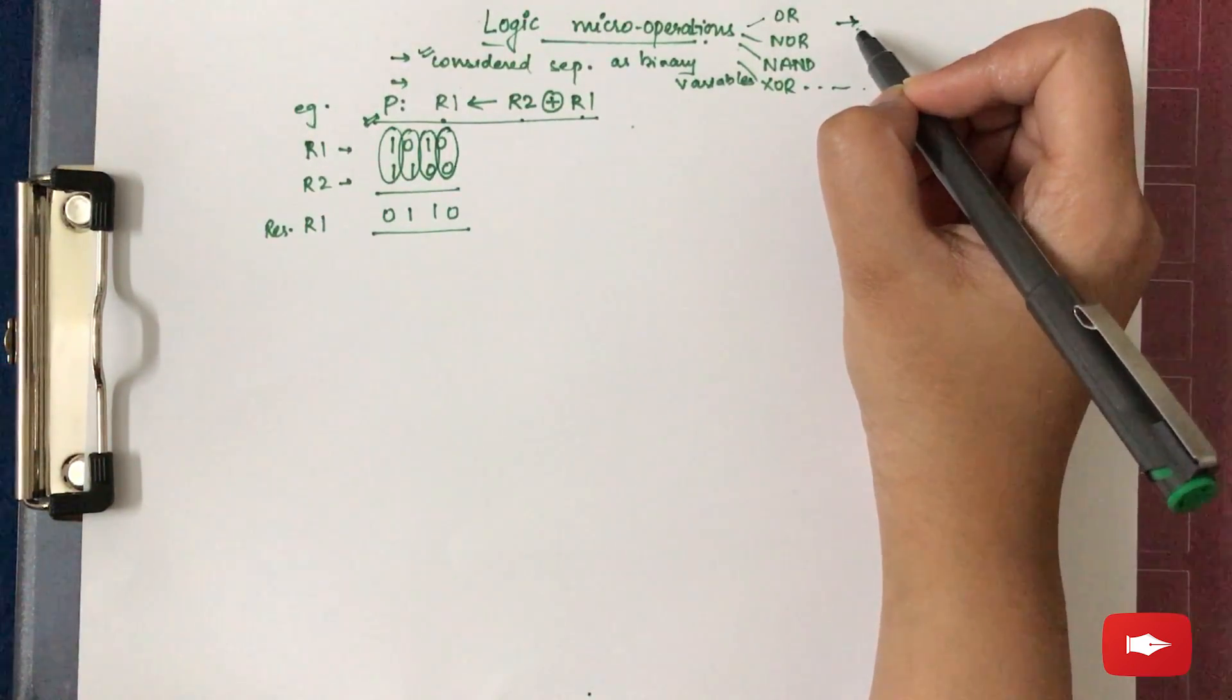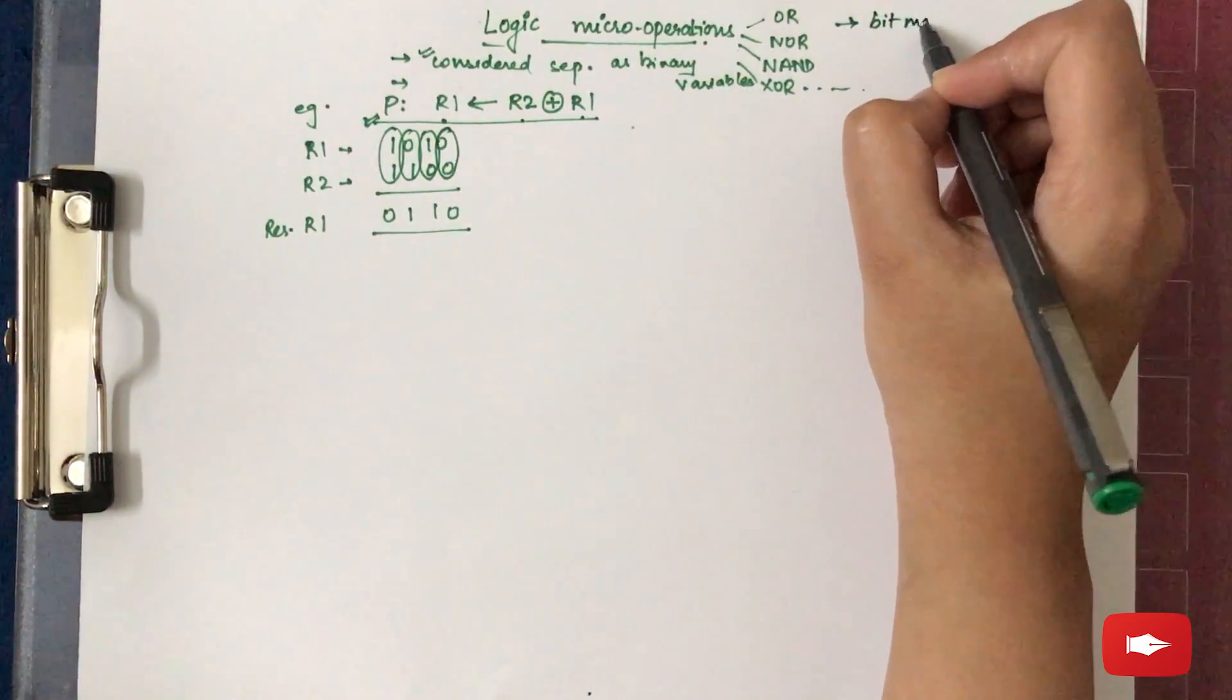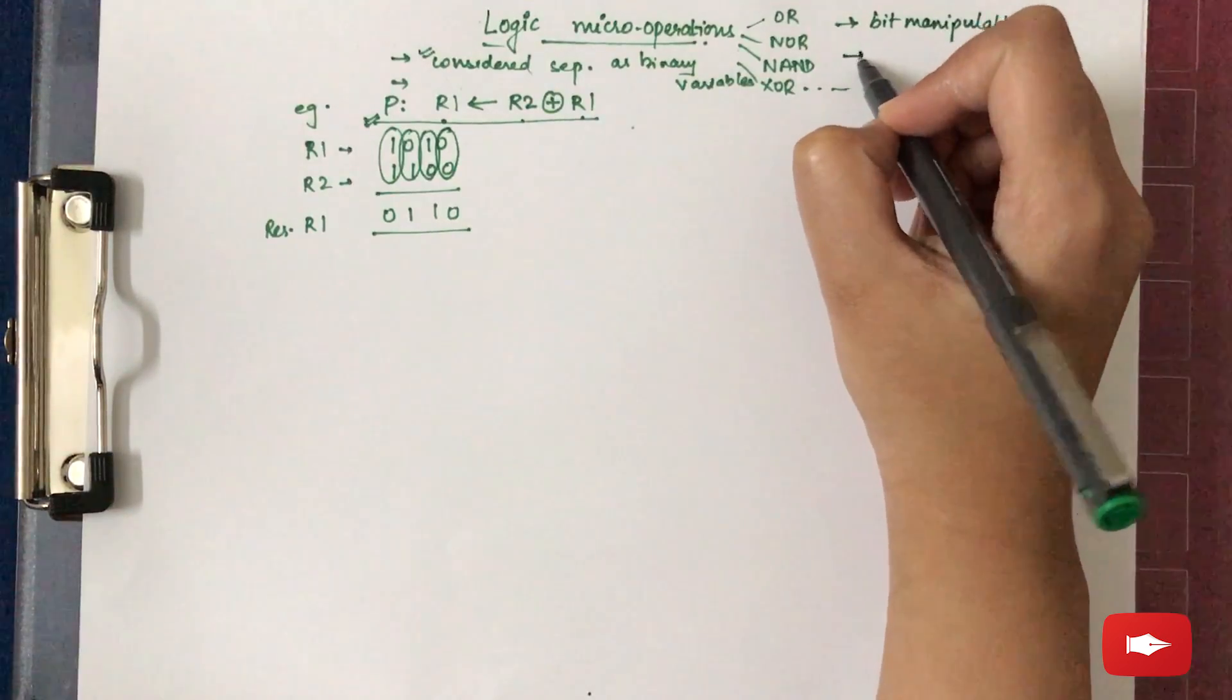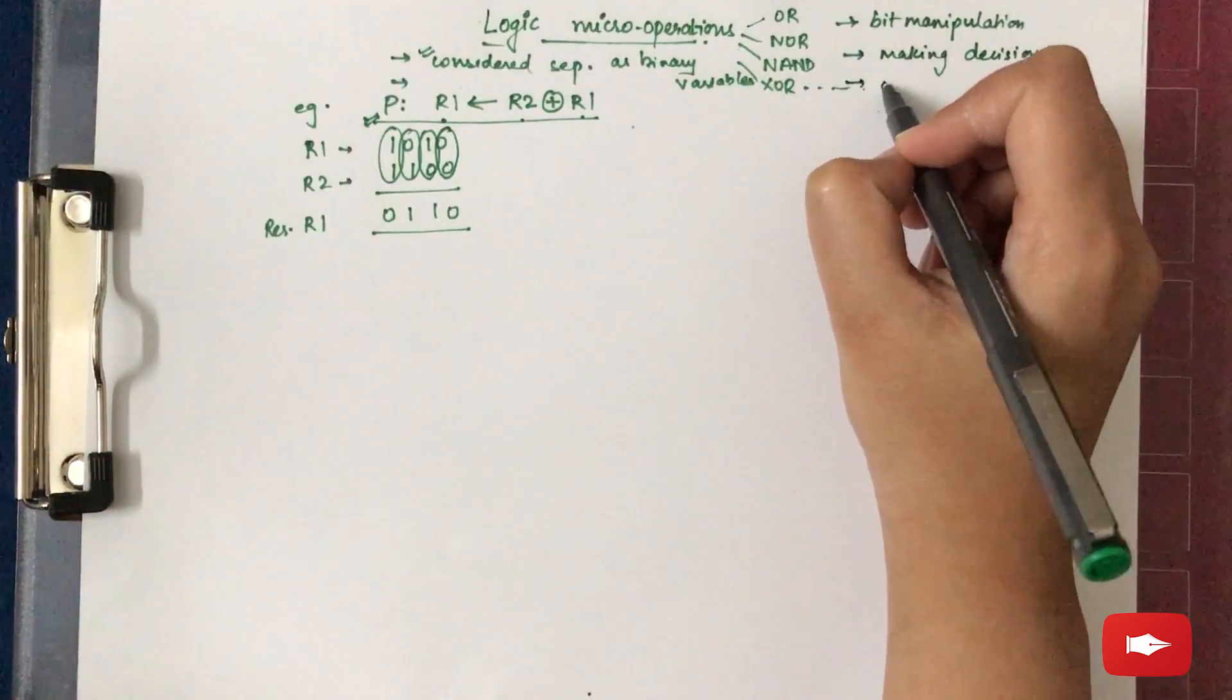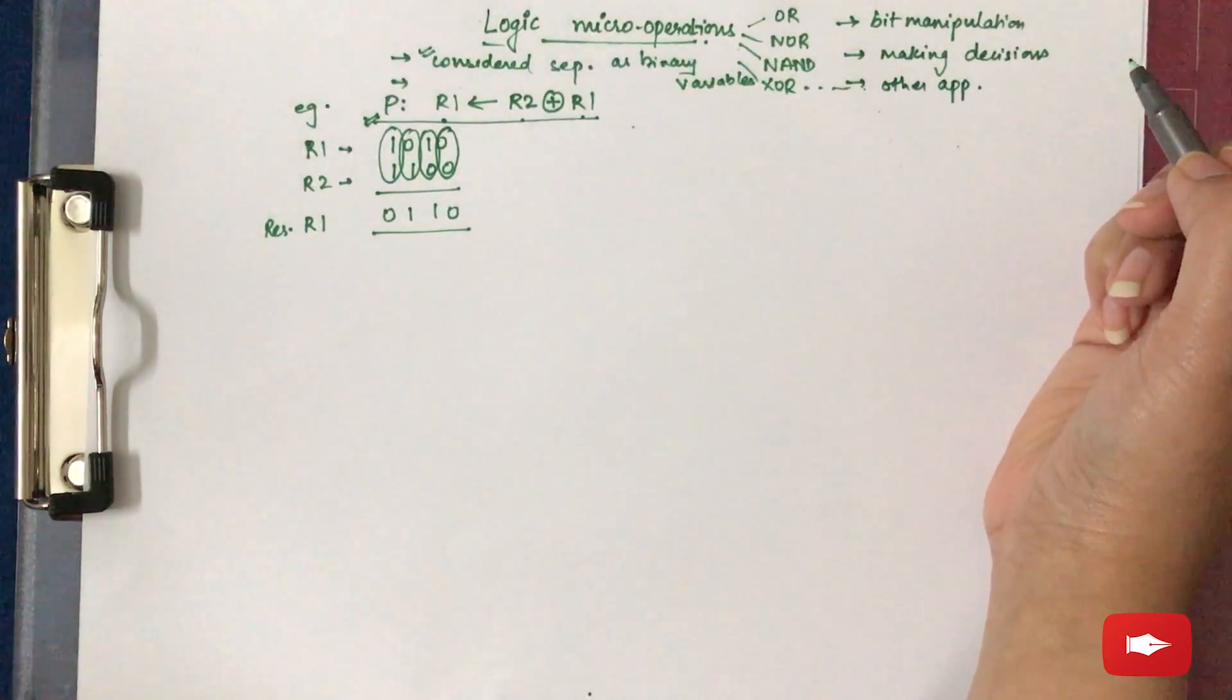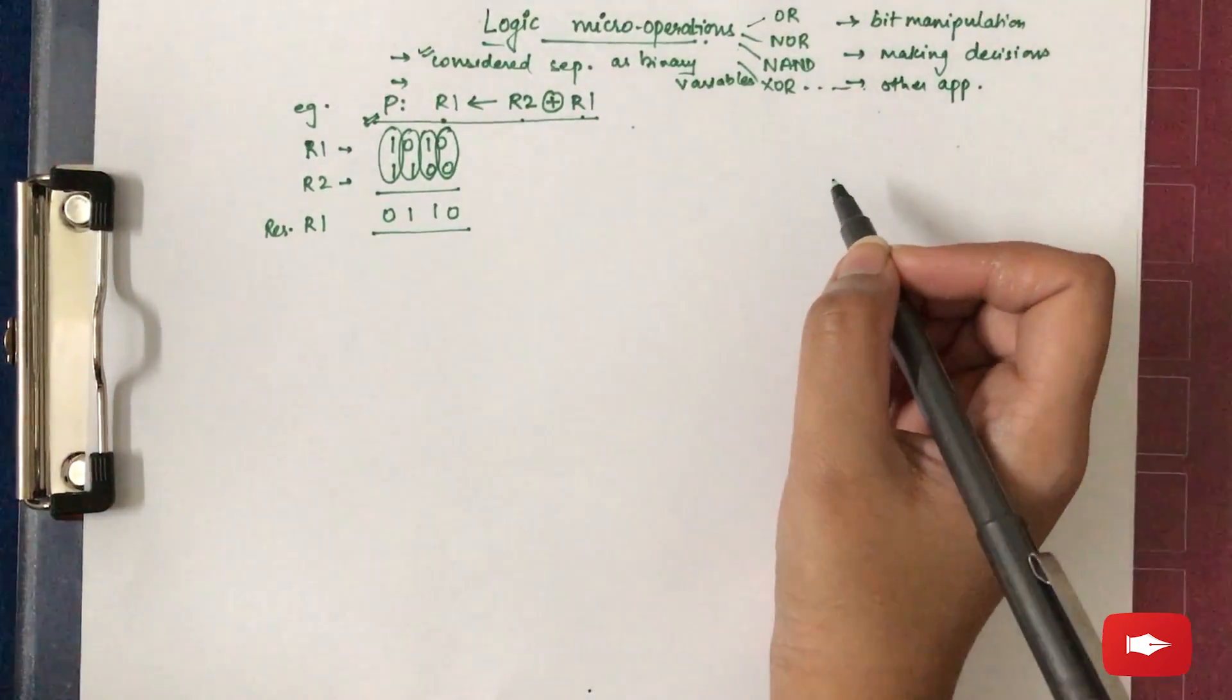Now what are the uses of logic micro operations? These logic micro operations can be used for bit manipulations, for making decisions, and other various applications that we are going to discuss further in this video.